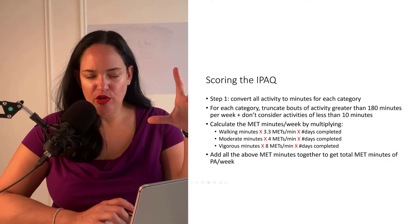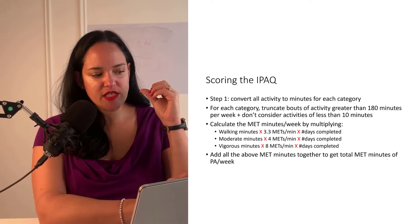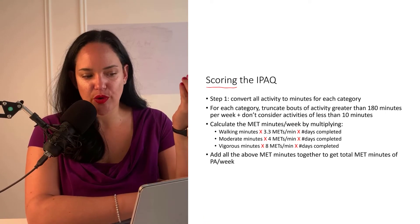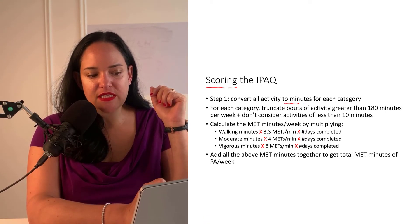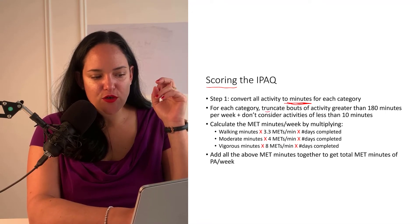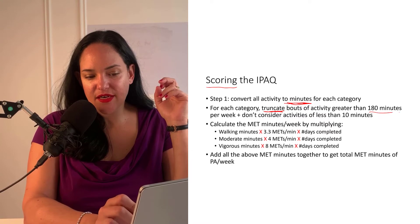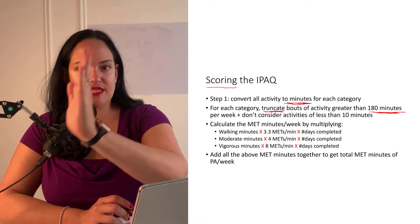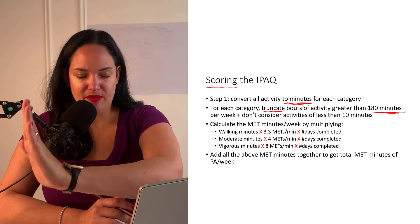So this slide, it's actually from one of your readings this week. It talks about now that you have your survey results, how do you actually score it? One of the first steps is to convert all the hours to minutes and then to truncate amounts of physical activity of more than 180 minutes per week and not consider anything over 180 minutes per week.